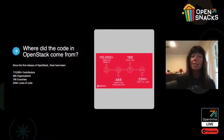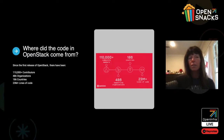Where did the code in OpenStack come from? Well, over the years there have been over 110,000 contributors, 486 organizations, 186 countries, and 23 million lines of code.